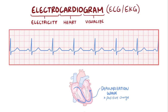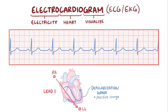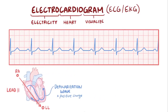This particular set of electrodes is called lead 2, for example, with one electrode on the right arm and the other on the left leg. So essentially when the wave is moving toward the left leg electrode, you get a positive deflection, like this big positive deflection corresponding to the wave moving down into the left and right ventricles.